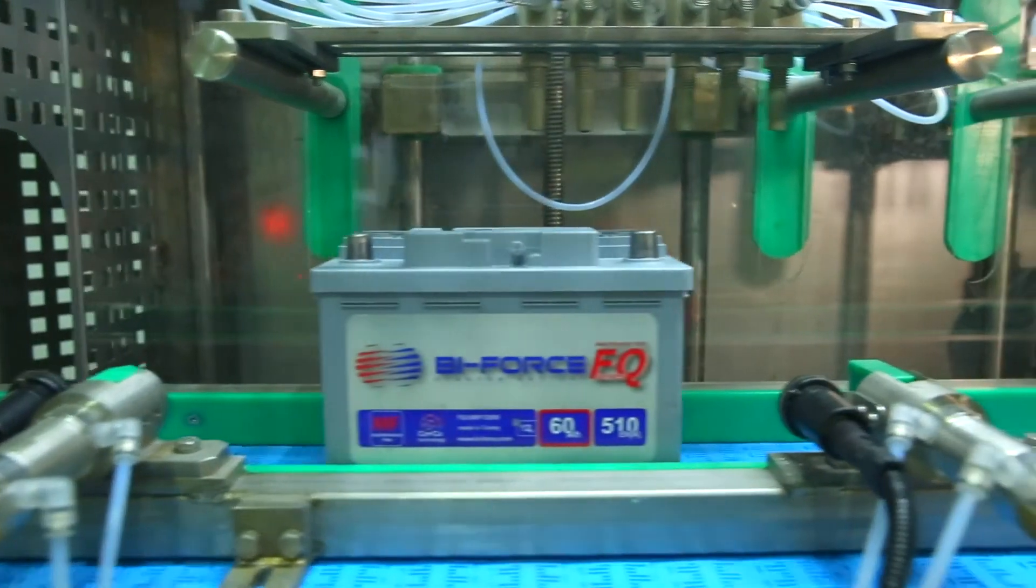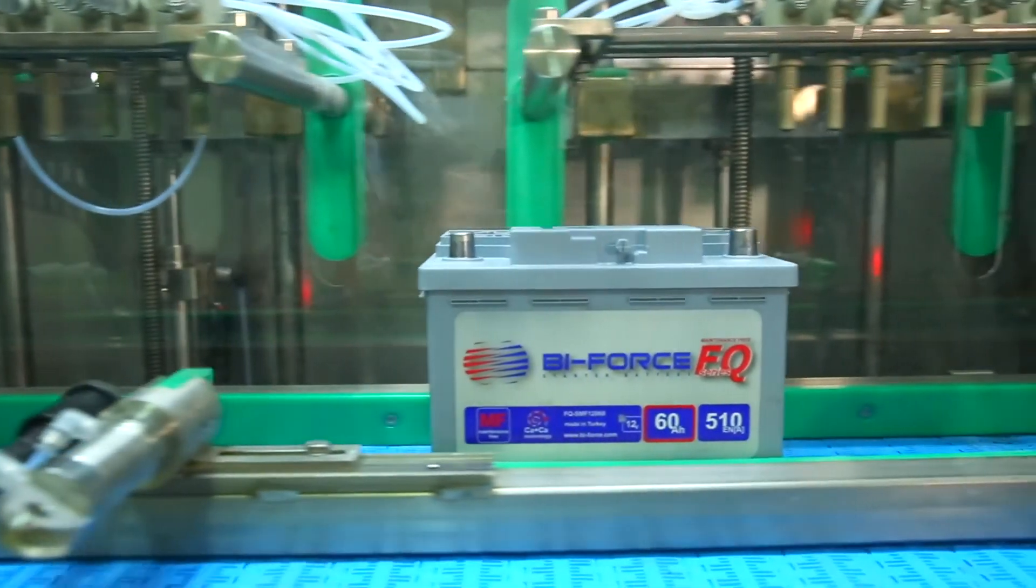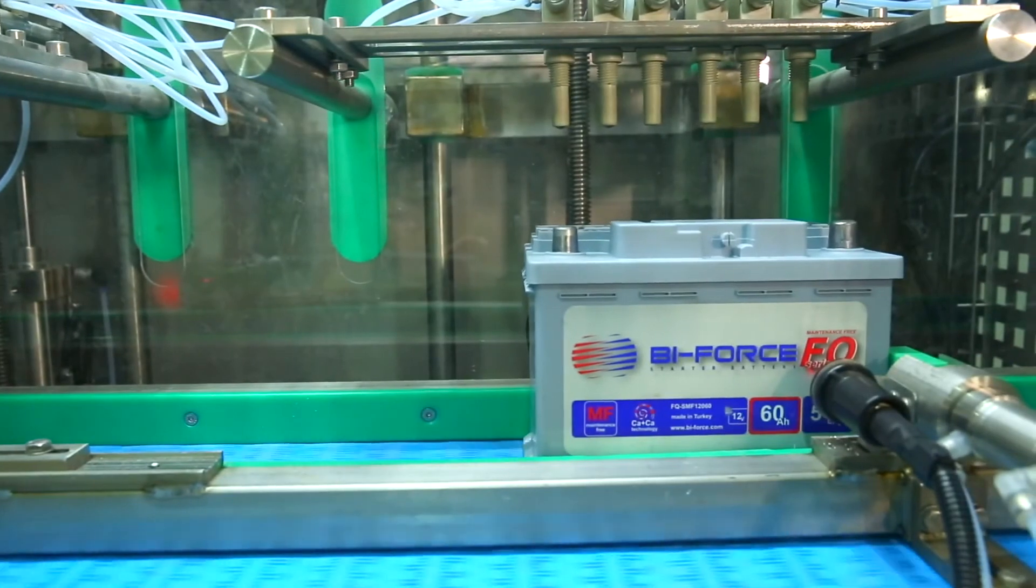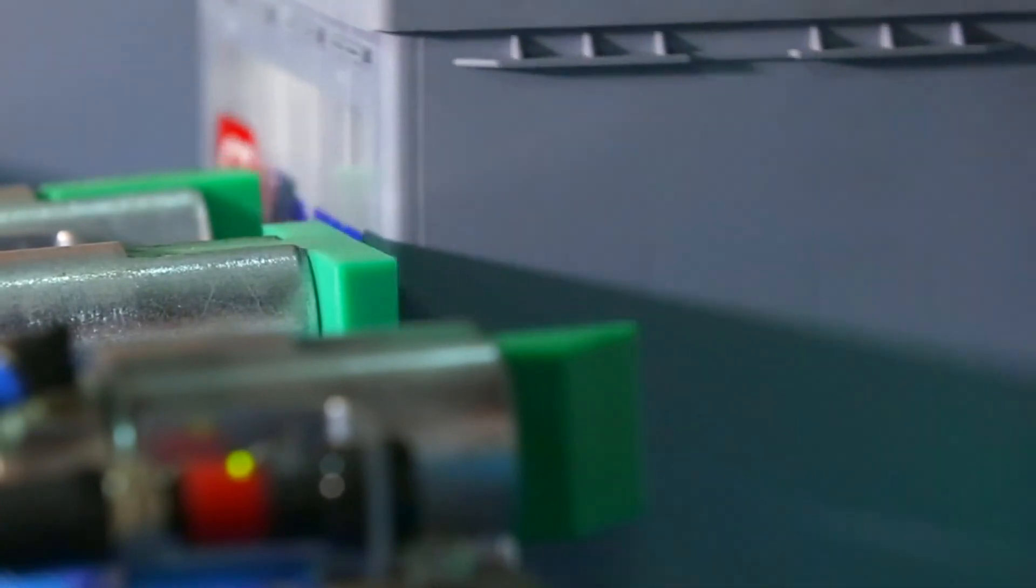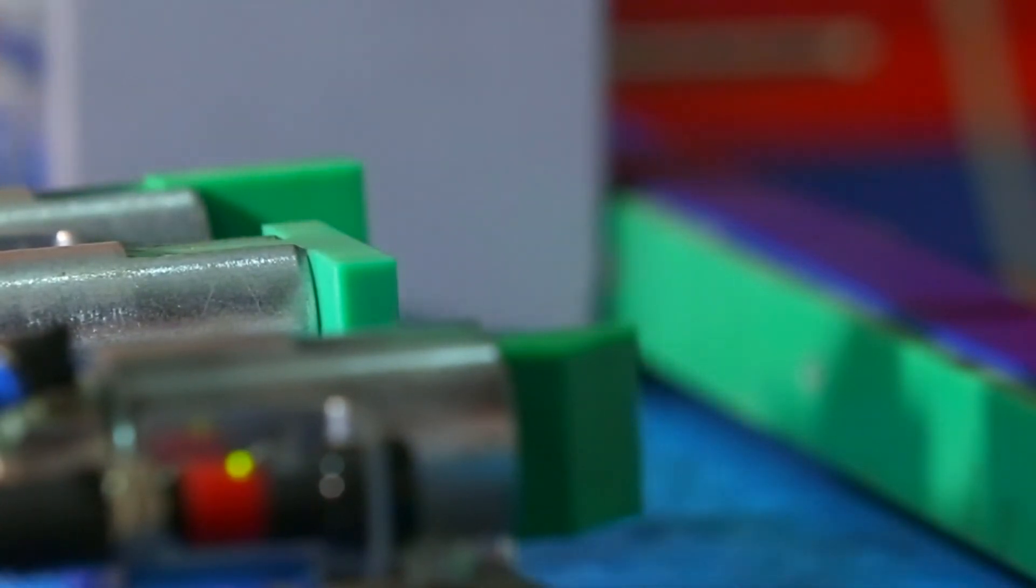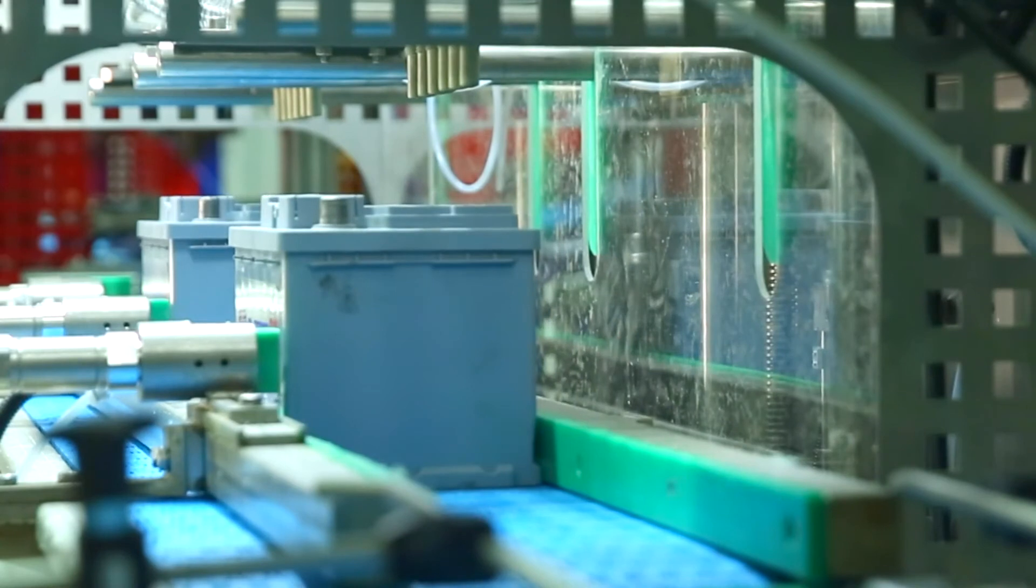The machine is equipped with a motorised conveyor with a simple and quick adjustment of the guides, as well as a reliable battery positioning and fixing system. The smart stop system does not allow the delivery of a new battery while the previous one is in the process of filling.